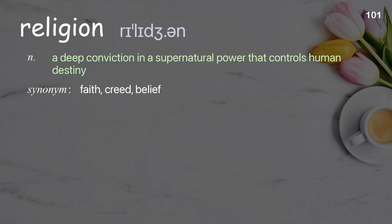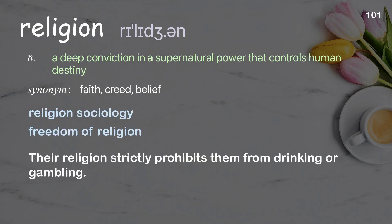Religion: a deep conviction in a supernatural power that controls human destiny. Examples: religion sociology, freedom of religion. Their religion strictly prohibits them from drinking or gambling.